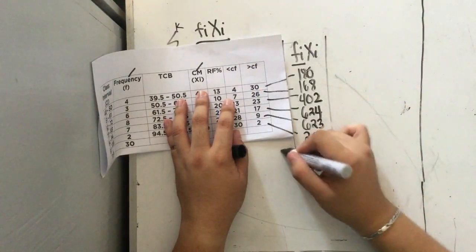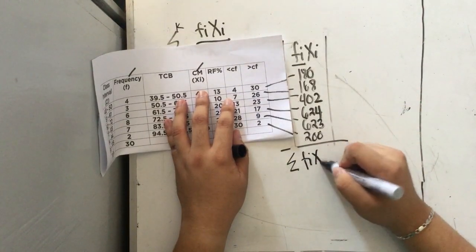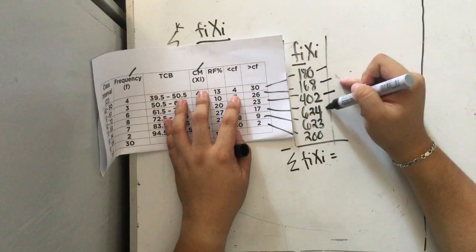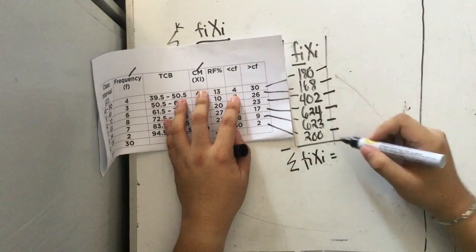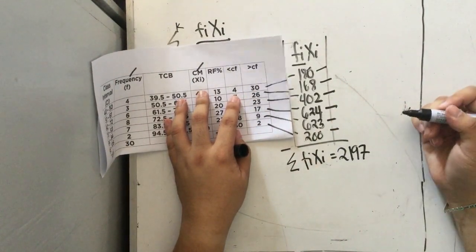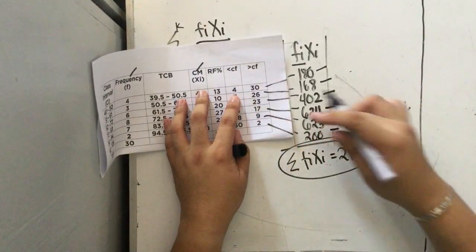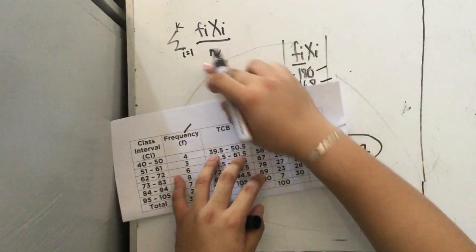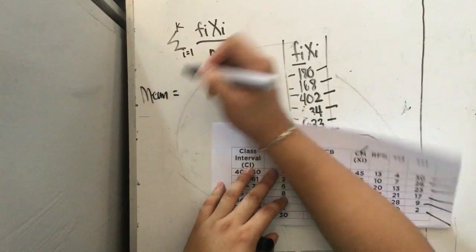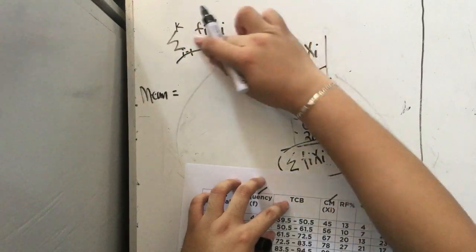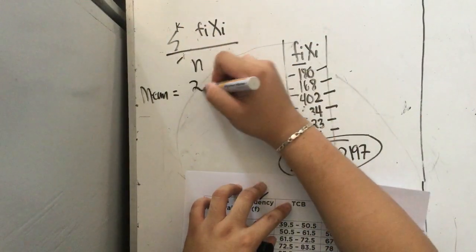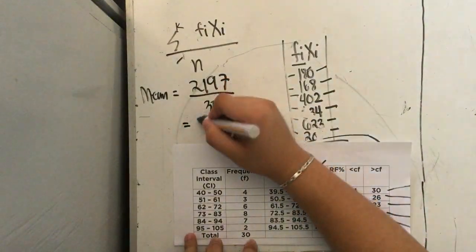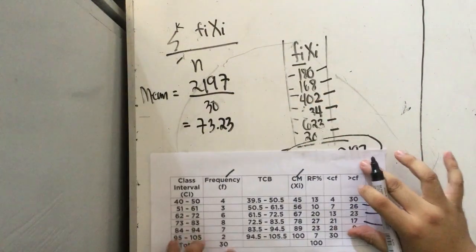Now we get the summation of f_i × x_i by adding all values: 180 + 168 + 402 + 624 + 623 + 200 = 2197. Using the mean formula: mean = 2197 / n, where n = 30 observations. So 2197 divided by 30 equals 73.23. The grouped mean is 73.23.